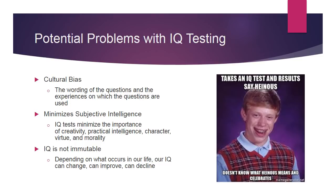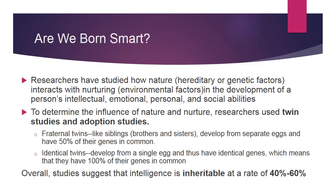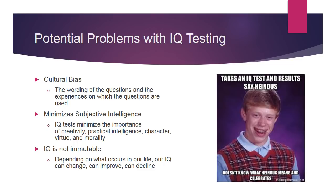A five- or six-year-old who goes through trauma can see their IQ decline. A child who moves from a traumatic environment to a very productive environment can see their IQ improve. IQ is only part of how we really look at intelligence.